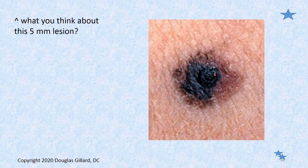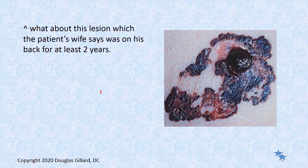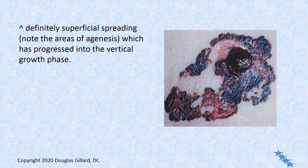Looking at another case: a five-millimeter lesion with nodular formation breaks the ABCDE rules — you would refer it out. That was a superficial spreading malignant melanoma that entered the vertical growth phase. Another case: a patient's wife said the lesion on his back had been there for two years. Look at the huge regression alongside a large vertical growth phase — the huge nodule is visible. It may be too late for this patient — this is advanced disease, a superficial spreading melanoma that has progressed into the vertical growth phase.